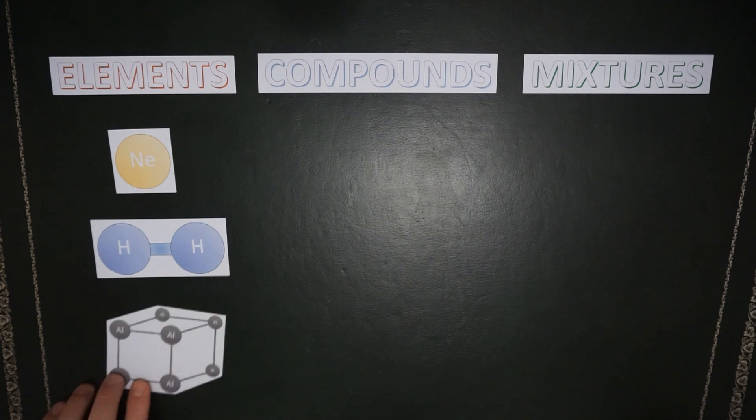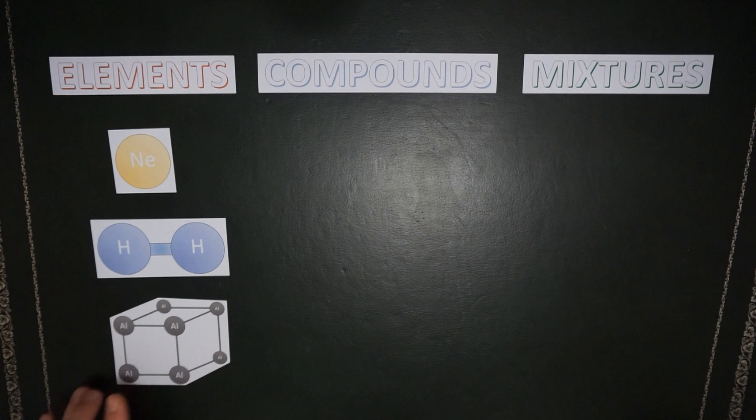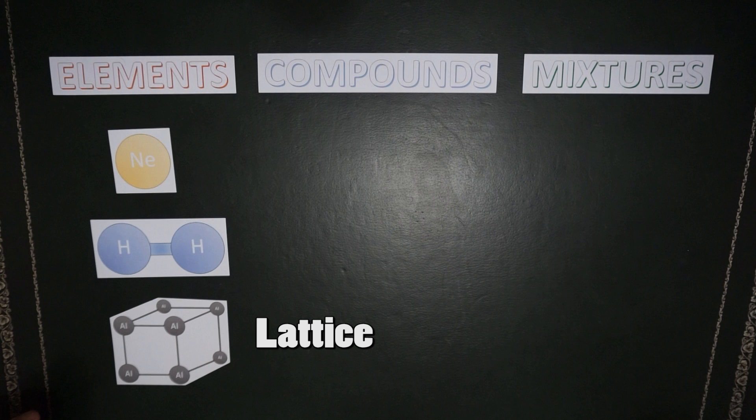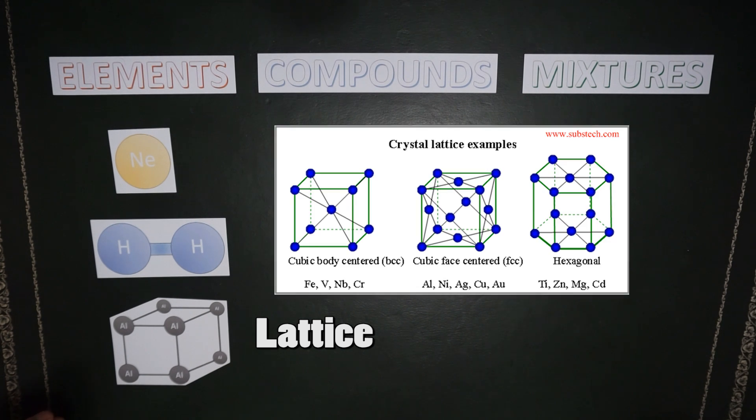Our third type of atomic arrangement applies to 80% of our elements, our metals. That's this three-dimensional shape that we call a lattice. They don't all form cubes like this, they form other different three-dimensional shapes, but in all cases we call it a lattice.